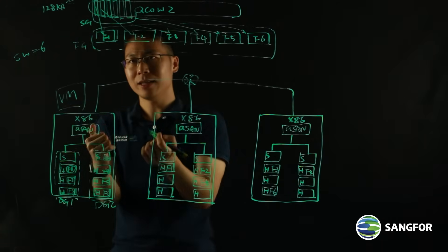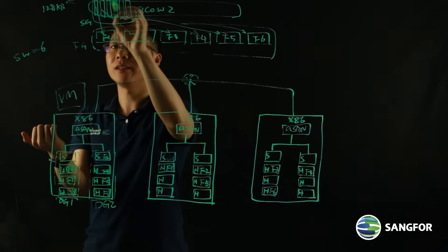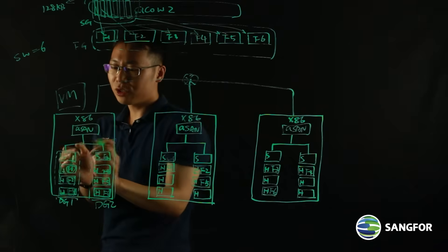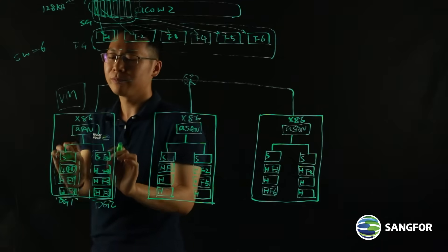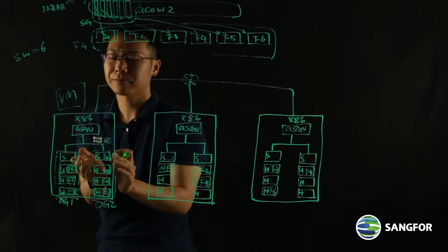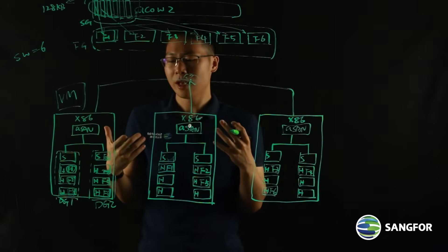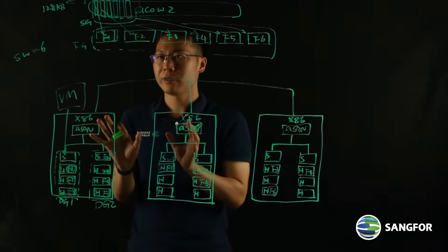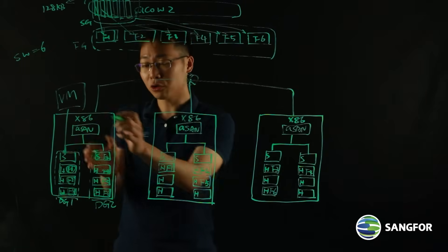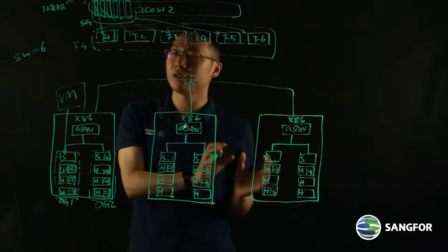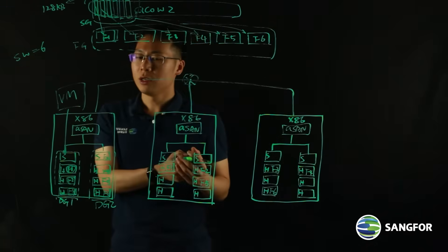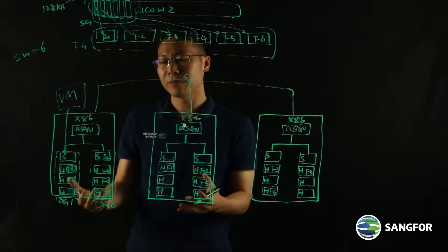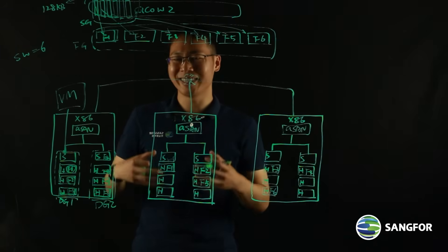If I want to read a portion of data, and this data is composed of all these stripes, I need to read across these disk groups — so I can utilize the performance of these two SSDs. And if I need to write data, the data will be written to the SSD in priority to boost performance, and also another copy goes to the SSD in the other disk group on another node. In that way, we are utilizing more SSDs and more HDDs to improve the concurrency of disk I/Os.